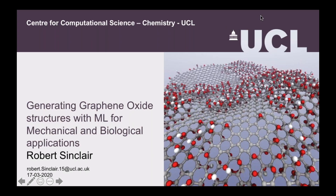Thank you for that introduction. I'm a PhD student at UCL in Peter Coveney's lab and I've been working on generating accurate graphene oxide structures for atomic simulations using machine learning for mechanical and biological applications.